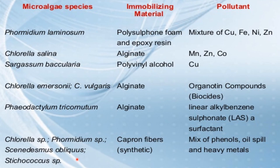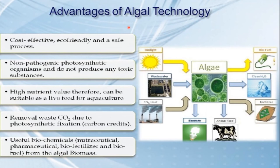These are further examples of immobilized microalgae. The advantages of algal technology, apart from heavy metal removal, include being cost effective, eco-friendly, and safe; being non-pathogenic and photosynthetic without producing toxic substances. They have high nutrient value and can serve as live feed for aquaculture. They assist in removal of waste carbon dioxide through photosynthetic fixation, and useful biochemicals such as nutraceuticals, pharmaceuticals, biofertilizer, and biofuel can be obtained from algal biomass.